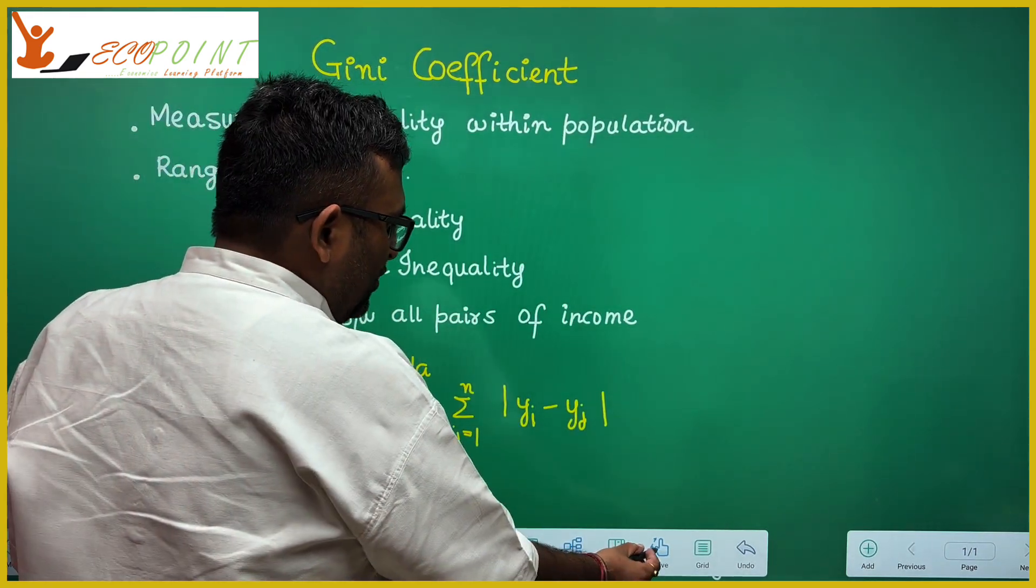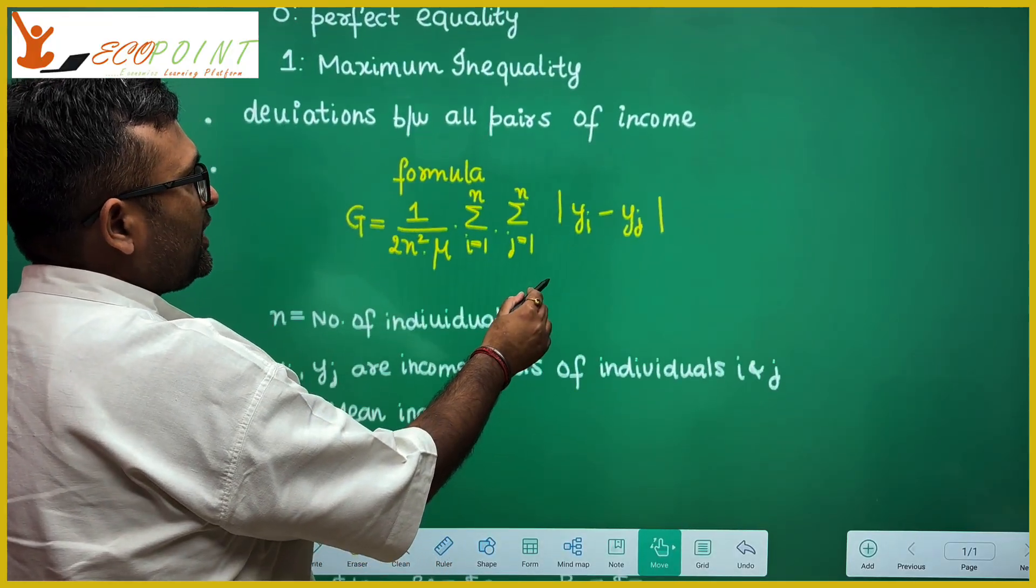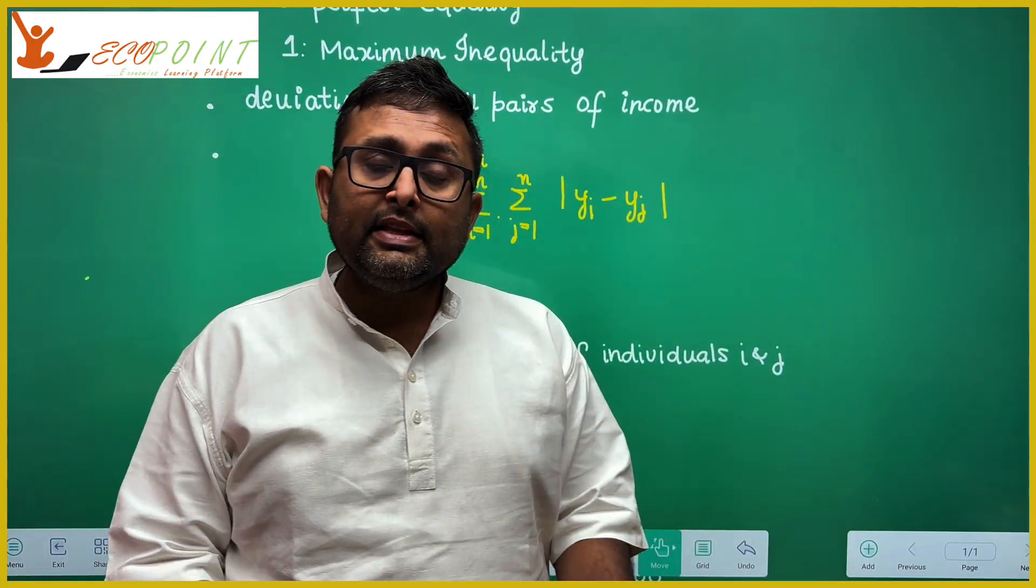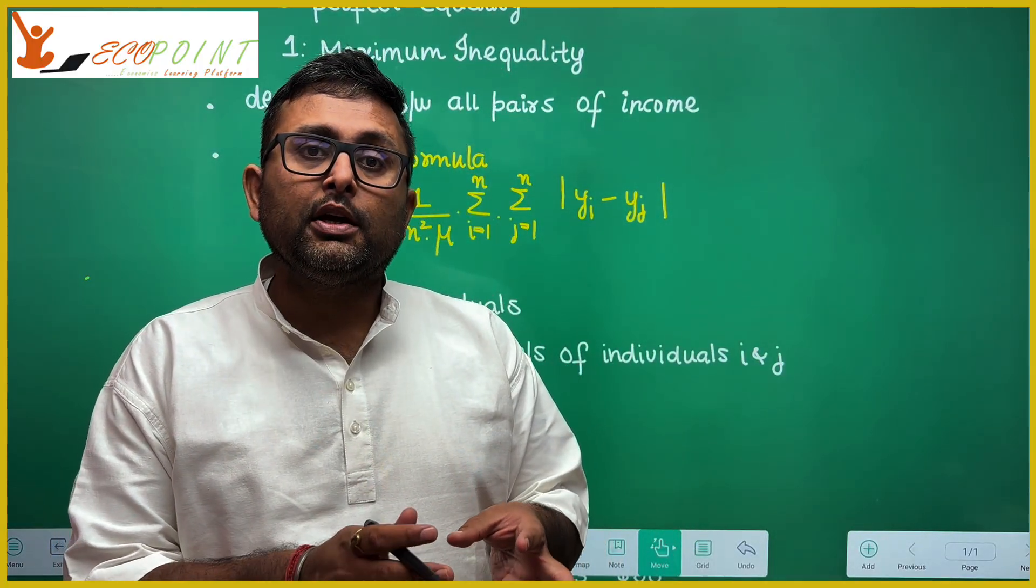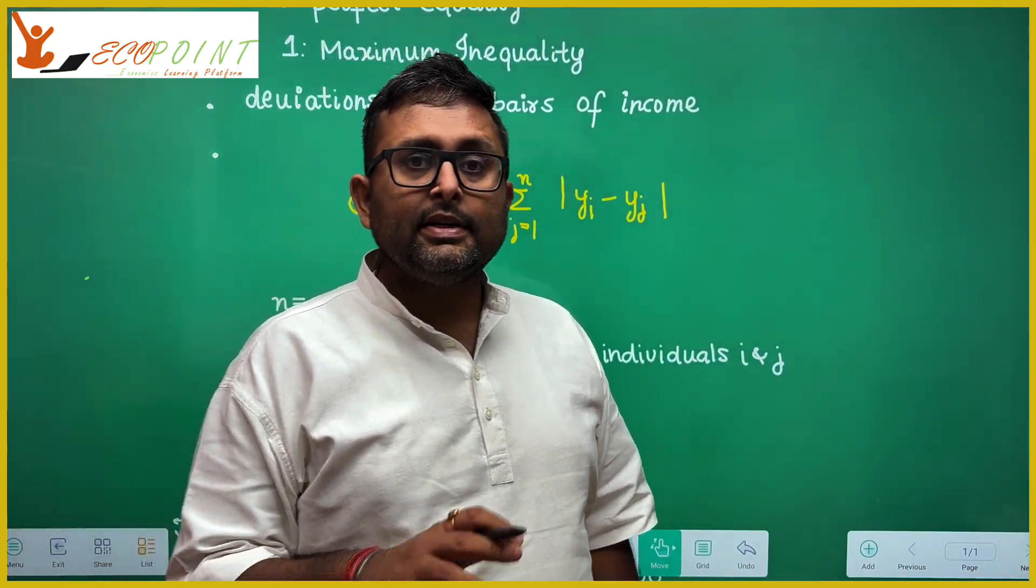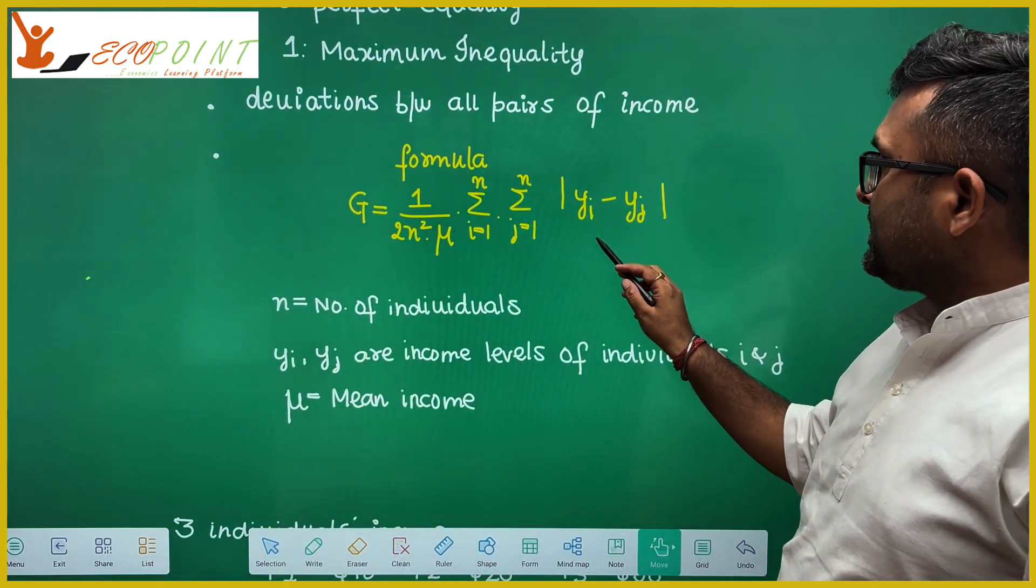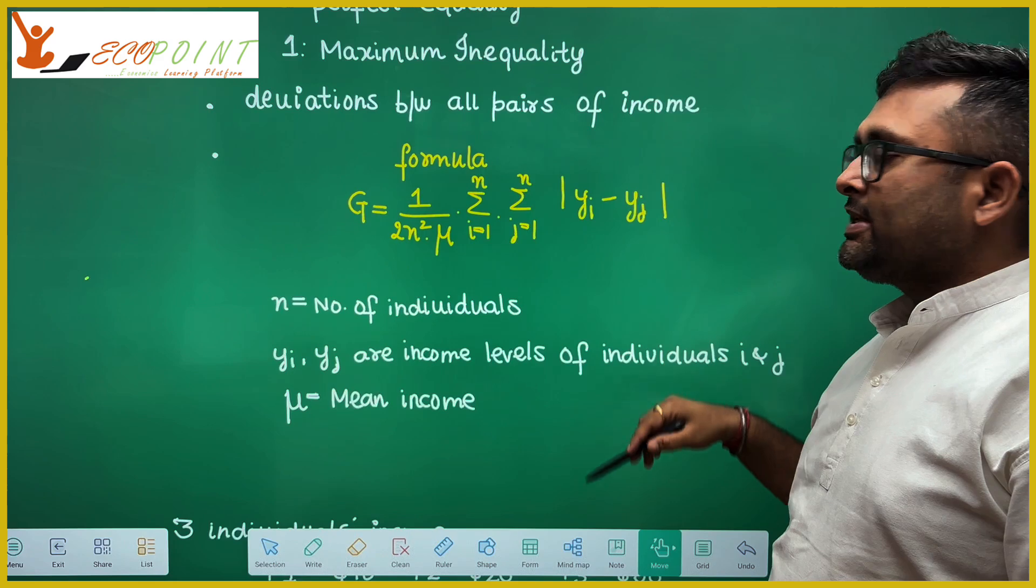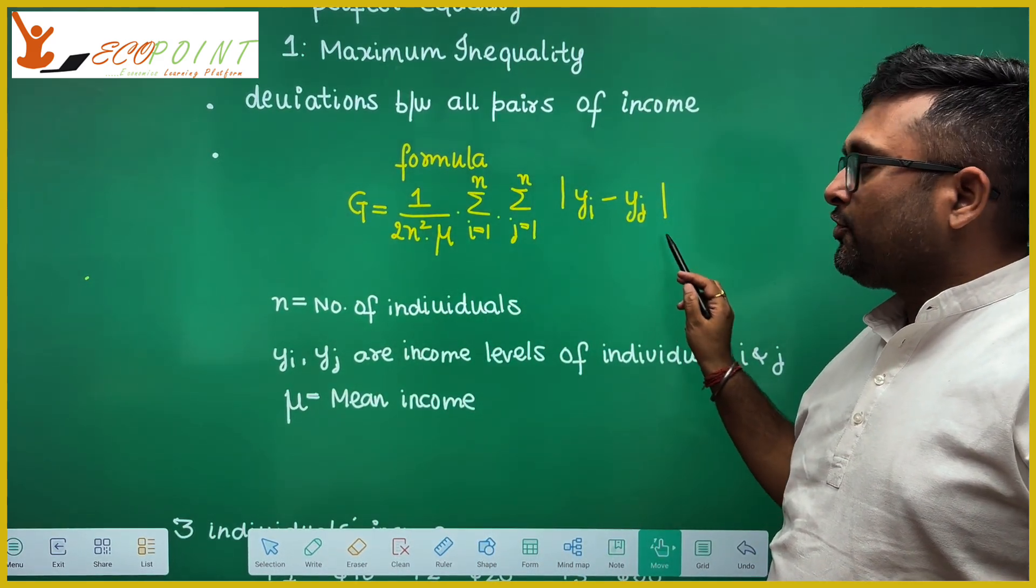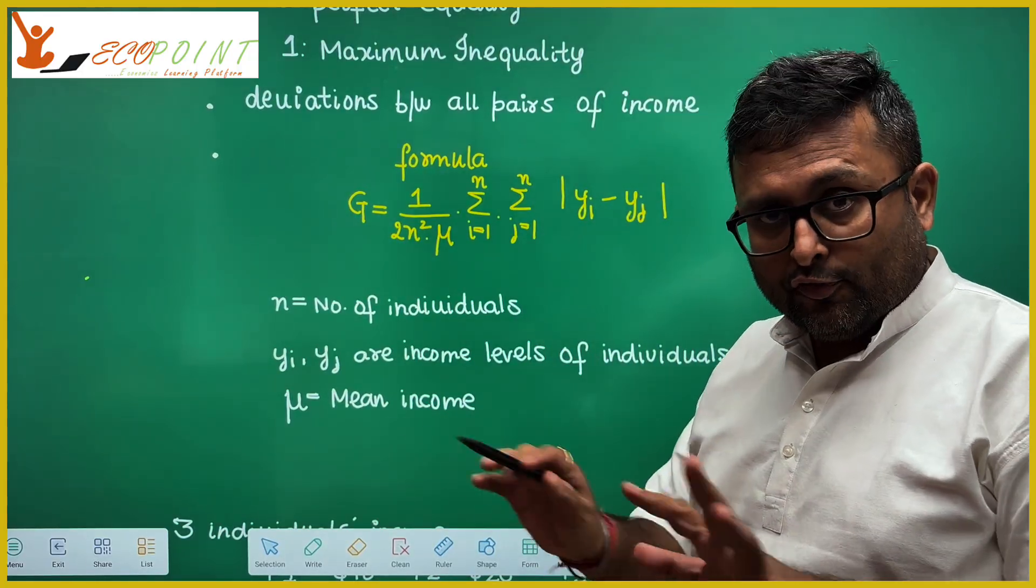Now one thing about Gini coefficient and the other measures is that other measures, if you remember, like for example mean absolute deviation, coefficient of variation, they were taking the deviations of income from the mean income, while Gini coefficient takes the deviation between the pairs of income. So if you have a look at this, for example I am individual I and you guys are individual J. So it is taking up the deviations between the two income levels, not from the mean income.